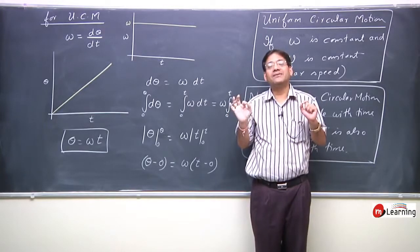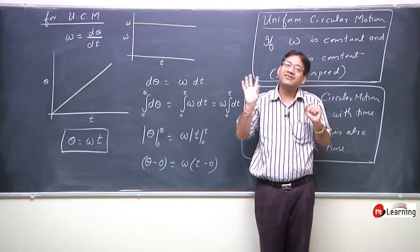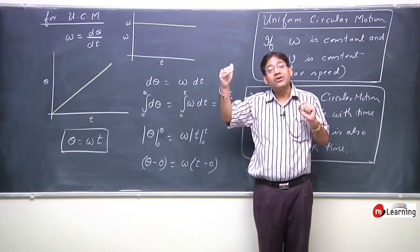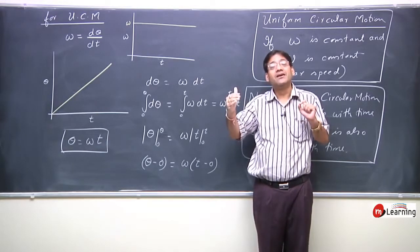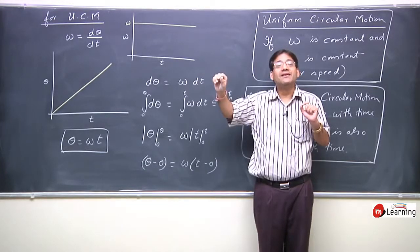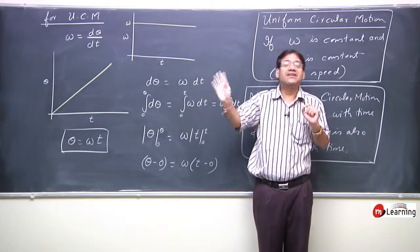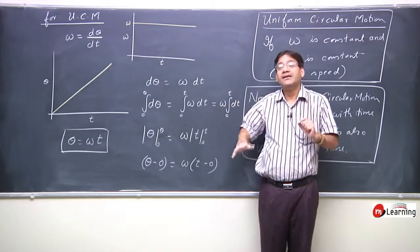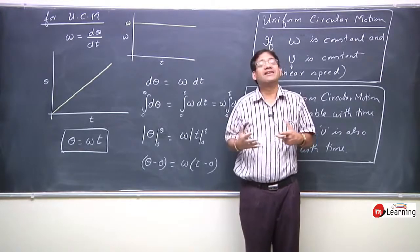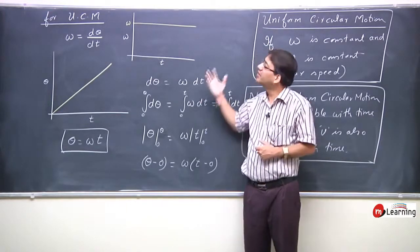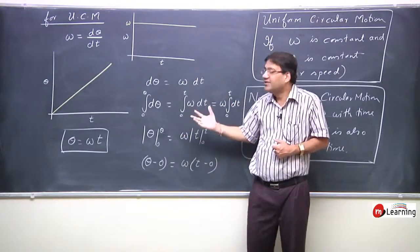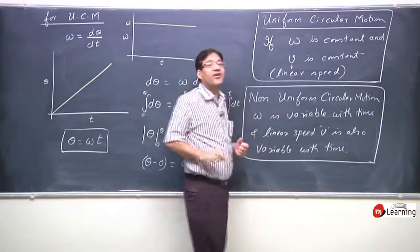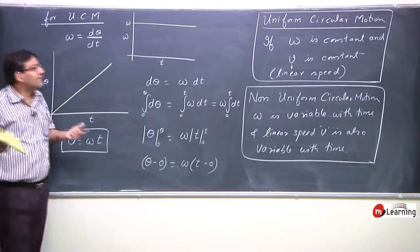उसमें ना तो angular velocity बढ़ रही है ना ही angular velocity कम हो रही है — वहाँ इस समय constant angular velocity से घूम रहा है। जब आप switch off करोगे तो उसकी angular velocity धीरे-धीरे कम होने लगेगी और finally रुक जाएगा। यदि आपने regulator से speed 2 से 3 या 4 points पर ले गए तो कुछ समय के लिए angular velocity बढ़ेगी। मगर यदि fan लंबे समय से on है तो उस fan में किसी भी particle का जो motion हो रहा है वो circular motion है और वो uniform circular motion है। इस uniform circular motion को अभी हमें बड़े detail में समझना है, पर उसके पहले non-uniform circular motion के लिए भी एक basic terminology जरूर समझ लें।